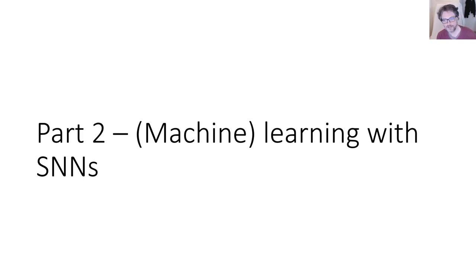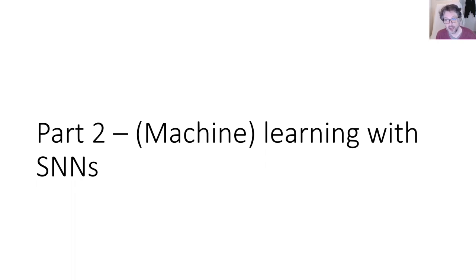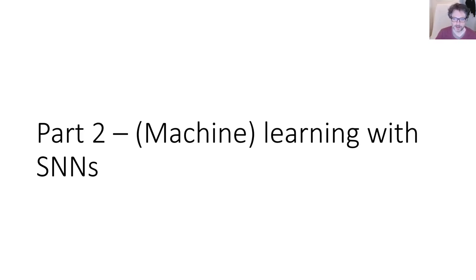Welcome to part two of the tutorial. In this part we're going to have a look at the latest developments that have been happening over the last few years, where people have been using methods from machine learning to train spiking neural networks. I think this is a really exciting time for this sort of work — it's really moving rapidly, there's loads of stuff going on, and I'm really excited to be able to bring this to a wider audience.